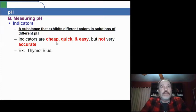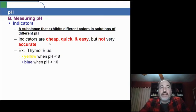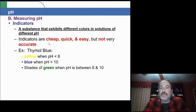An example is a type called thymal blue. This particular substance, when the pH is less than eight, it turns yellow. When it's greater than 10, it's blue. And anywhere in between, it tends to be shades of green.